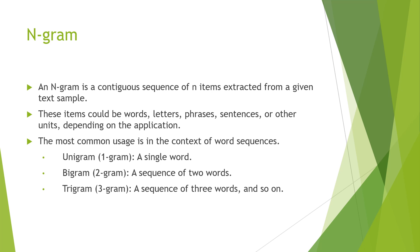We have to generate n-grams from a given text. There are three types of n-grams: a unigram is a single word, a bigram is a sequence of two words — we extract combinations containing two words from a sequence — and a trigram is a sequence of three words. Similarly we can also generate combinations of multiple words.